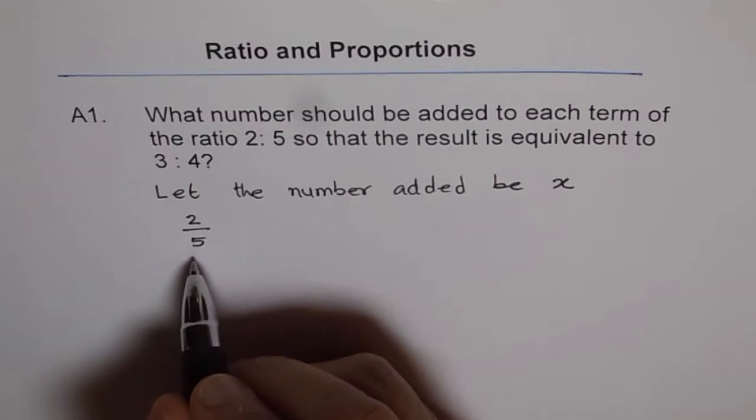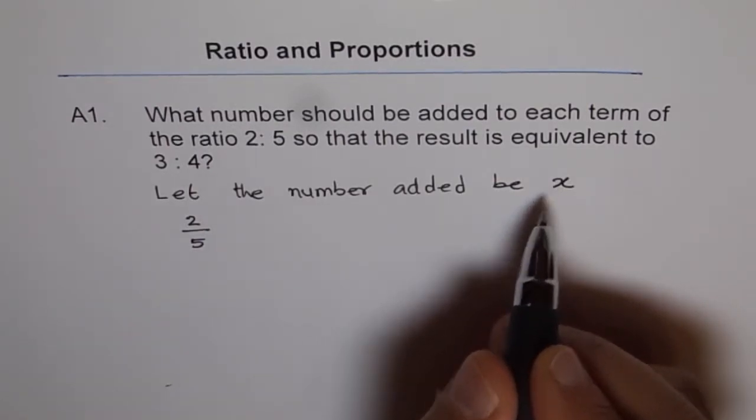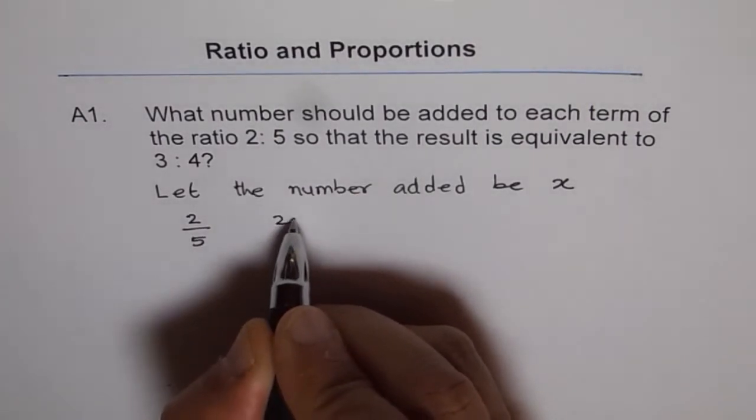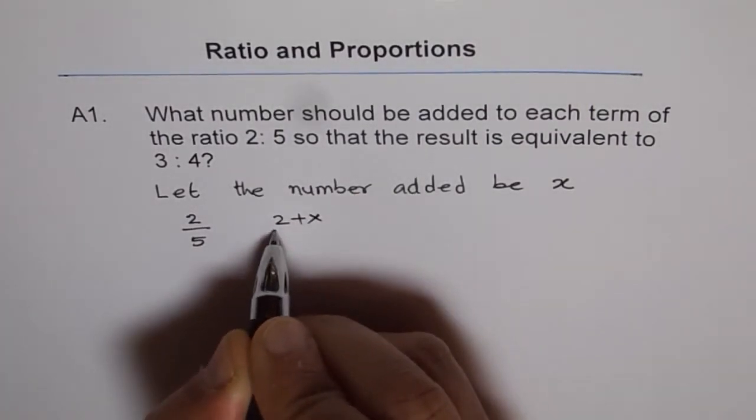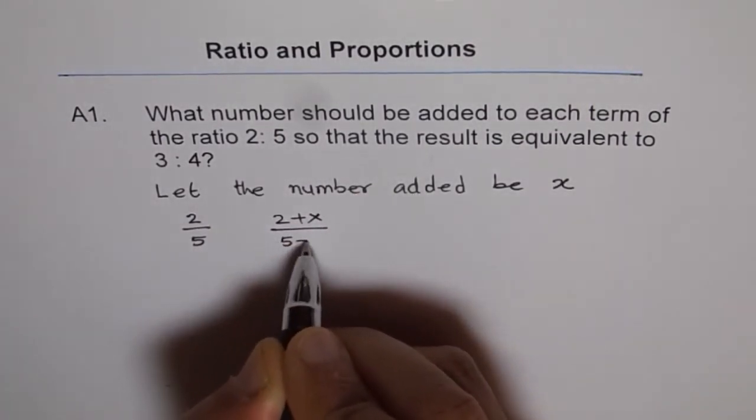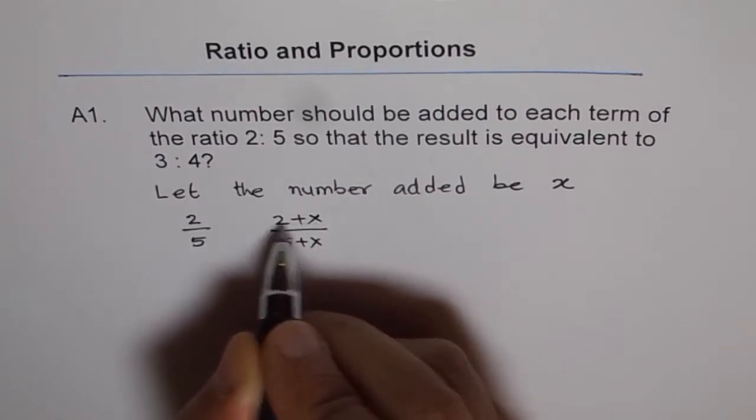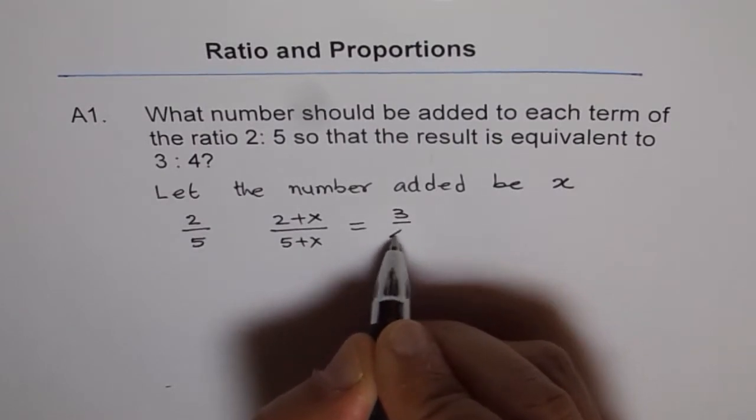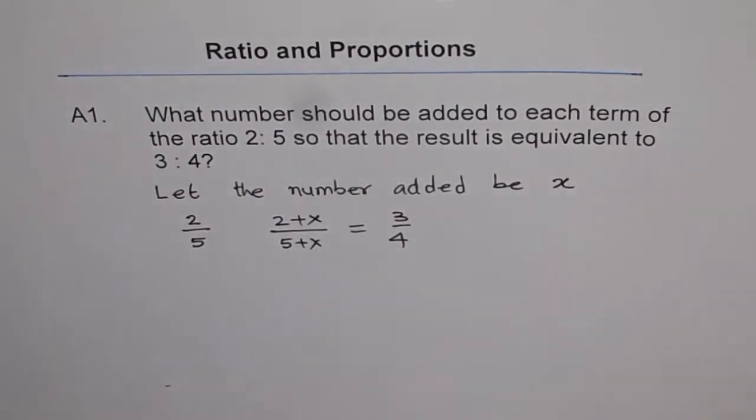That means, we made it like 2 plus x over 5 plus x. So, when you add x to both, then it becomes 3 over 4. Then it becomes 3 over 4. That is the question. So, this is what we are looking for.